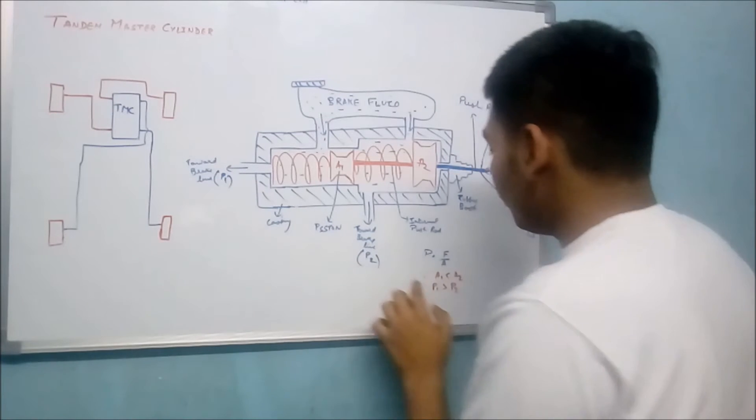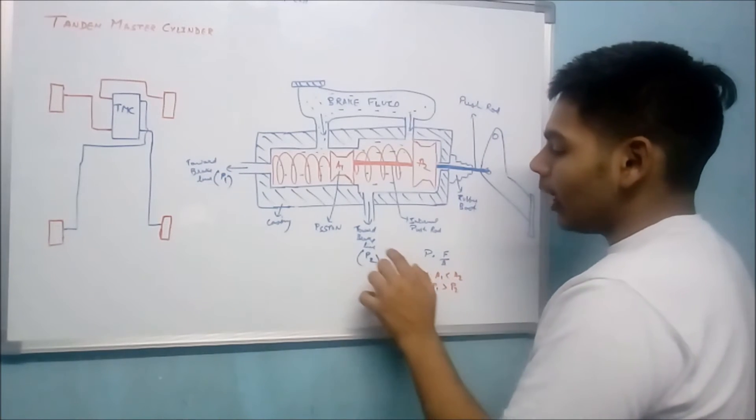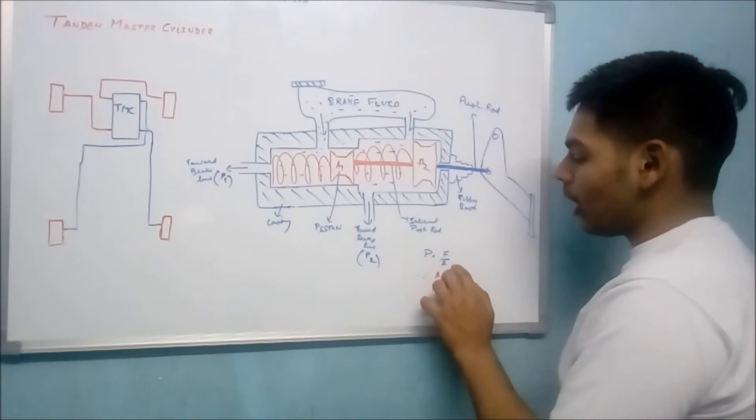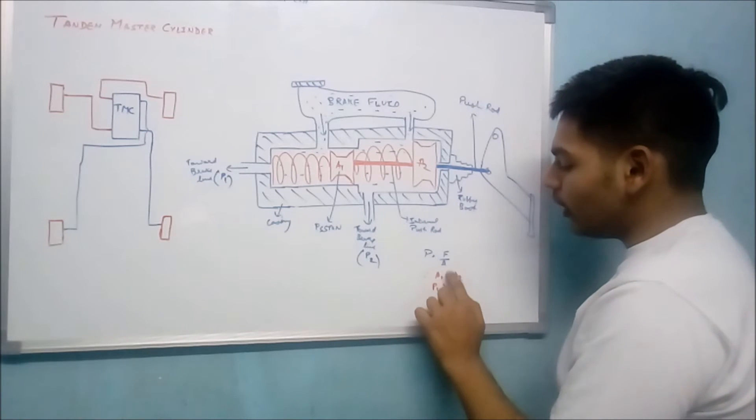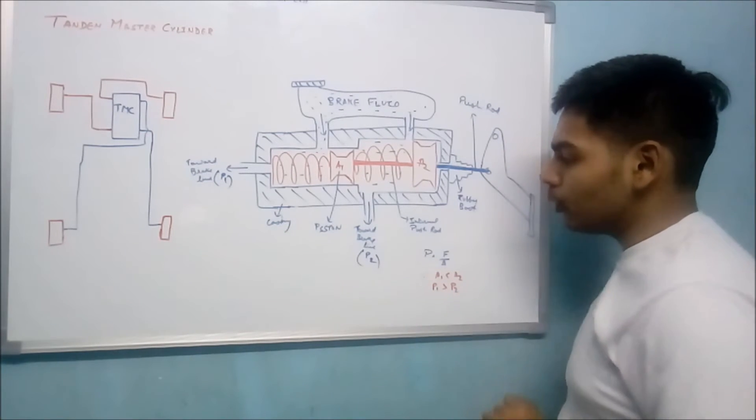The pressure P1 will be equal to F upon A1, and pressure P2 will be equal to F upon A2. Since A1 is less than A2, therefore P1 will be greater than P2.